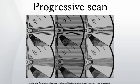HDTVs not based on CRT technology cannot natively display interlaced video; therefore interlaced video must be deinterlaced before it is scaled and displayed. Deinterlacing can result in noticeable visual artifacts and input lag between the video source and the display device.